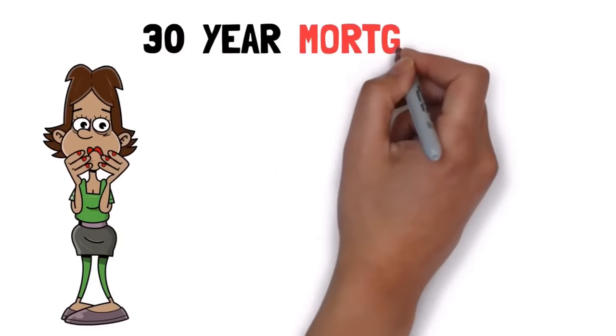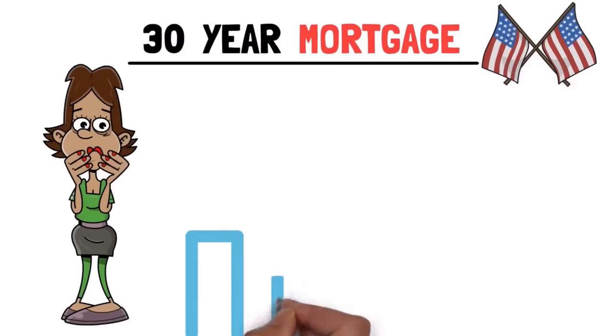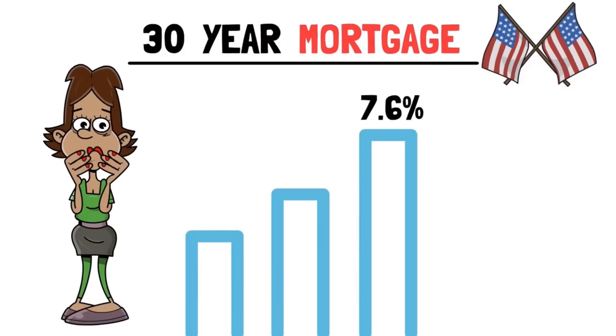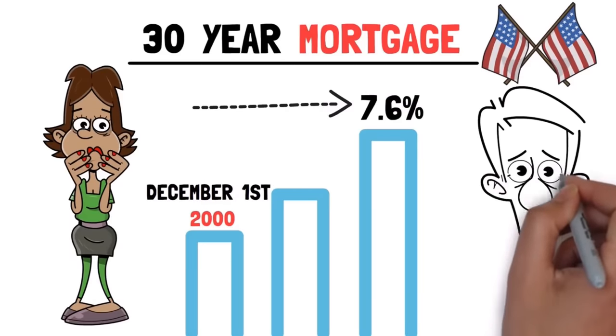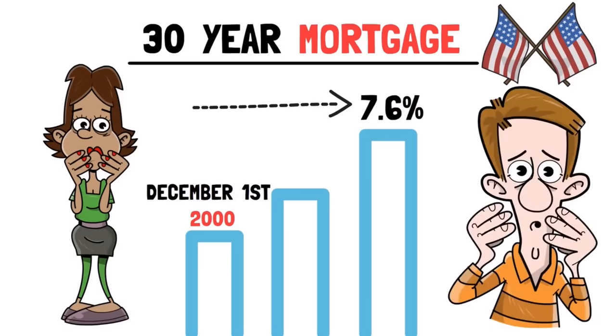We've all heard the news. The average 30-year mortgage in the United States just surpassed 7.6%, the highest level since December 1st, 2000. From this perspective, the situation has become dire.